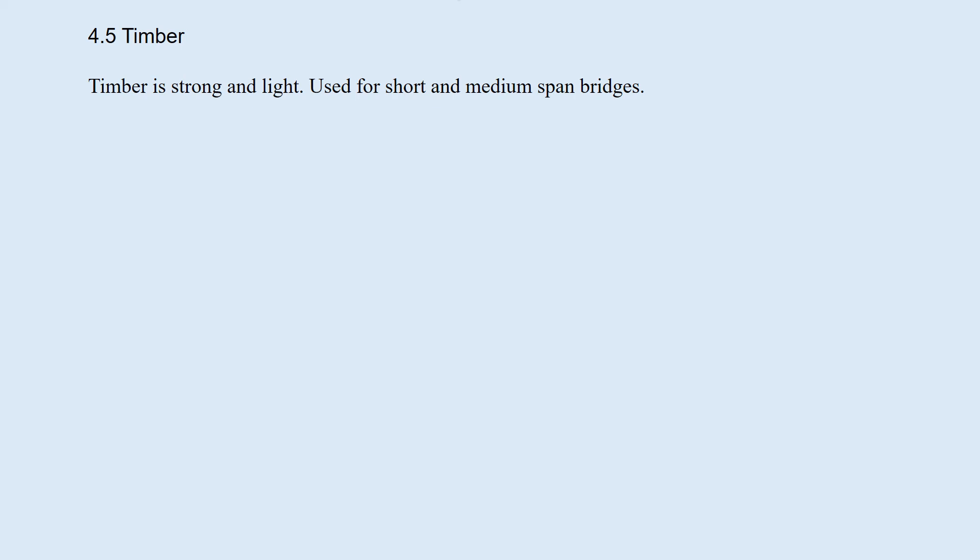Section 4.4: Timber. Timber is strong and light and is used for short and medium span bridges. Trees are classified into two categories: needle-leaved trees and broad-leaved trees. Broad-leaved trees are used for furniture, and needle-leaved trees are used for structures.